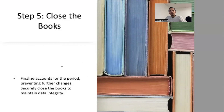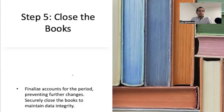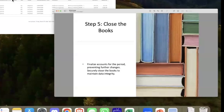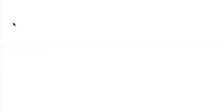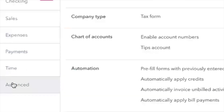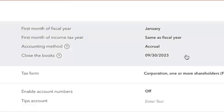We close the books because we don't want to accidentally make transactions in previous months that have already been reconciled and are clean — that would throw everything off and require digging back to find what happened. It's better to close the books. The way you close the books in QuickBooks is simple: go to Accounts and Settings, then Advanced, and close the books there.